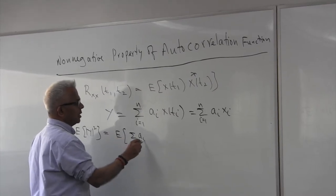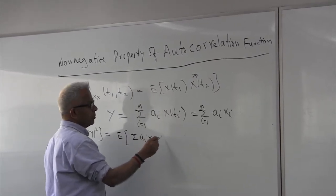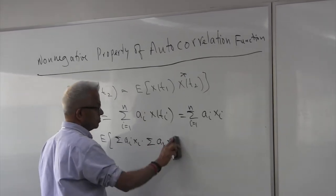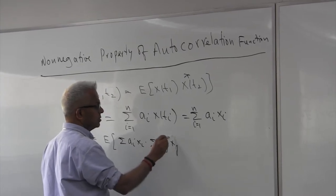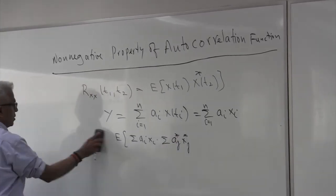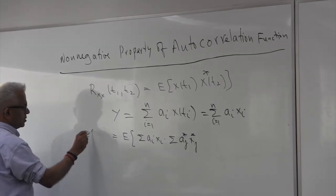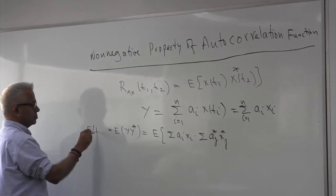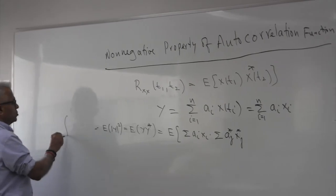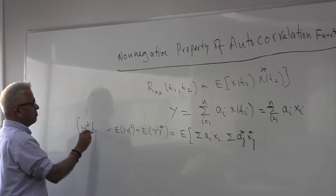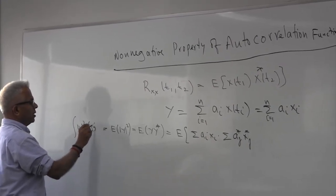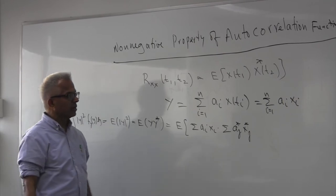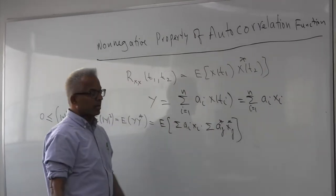If I define expected Y squared, Y is going to be sigma Ai Xi, Y multiplied by Y star, that is sigma Aj Xj star. Because expected value of Y squared is expected value of Y Y star. Y squared being Y squared multiplied by fYY dY. We know that this quantity is of course positive, definitely not negative.